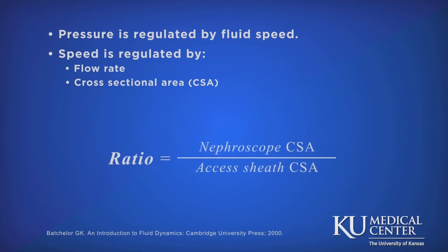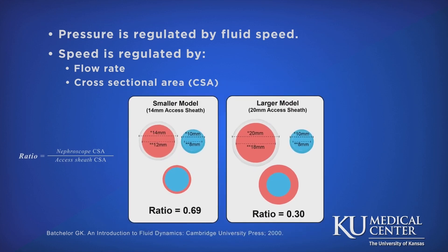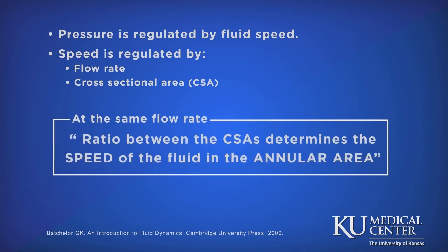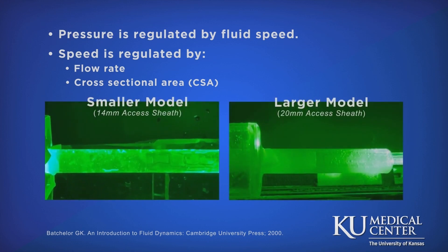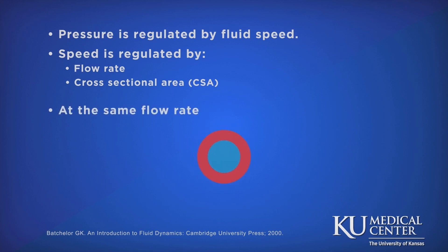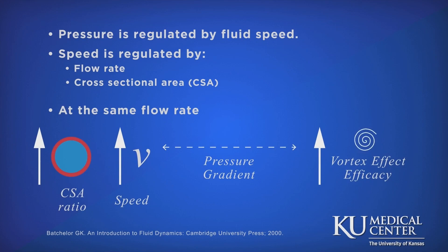We calculated the ratio between the nephroscope and access sheath cross-sectional areas. Notably, the smaller model has a higher ratio, which was demonstrated to provide higher speeds when compared to the larger model. Therefore, at the same flow rate, the ratio between the equipment's cross-sectional areas determines the speed of the fluid in the annular area. As speed regulates the pressure exerted by the fluid, we can explain the almost six times difference when comparing the pressure gradient between the two models. Considering the same flow rate, with higher cross-sectional area ratios, higher speeds are expected, which will generate higher pressure gradients, thus increasing the efficiency of the Vortex Effect.